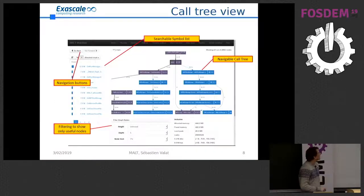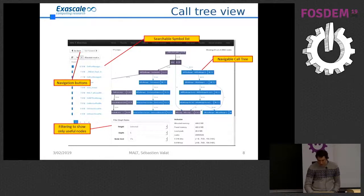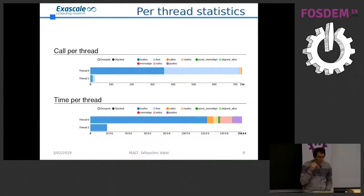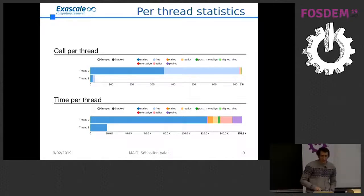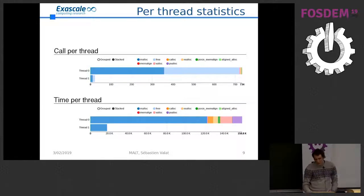Similarly to KCachegrind, you get a call tree annotated with numbers and colored red for hotspots — this part was done by a summer student at CERN. For supercomputers running multi-threaded applications, I also wanted to export how allocations are balanced: which thread is making all the allocations, is it balanced over threads, or do we have a thread making all the frees? You get a quick view of how your application stresses the memory allocator.